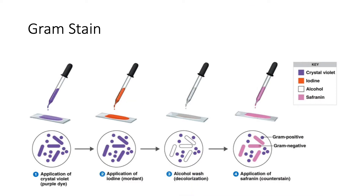Let's have a short review on our gram staining procedure. The first step is the application of your primary dye, in this case crystal violet. This is followed by your mordant, which is iodine, and then the most important step, decolorization using alcohol. And finally, you counterstain with your saphranine.